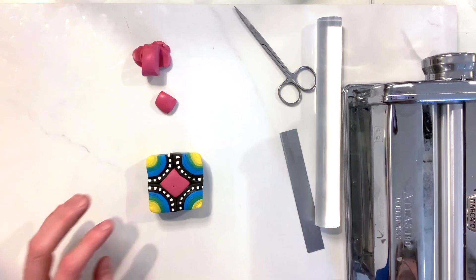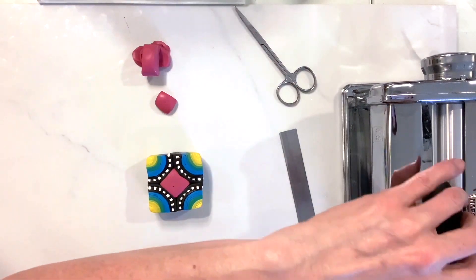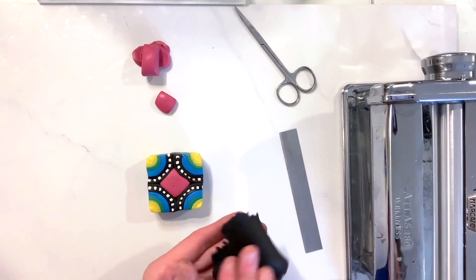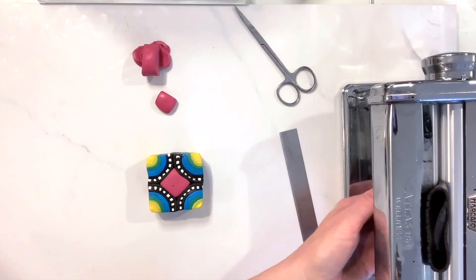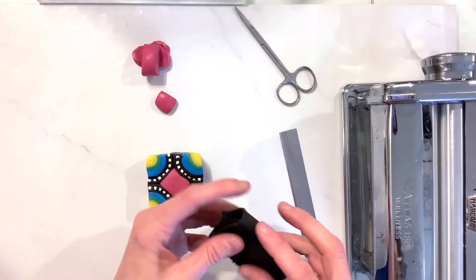Okay, so now that we have the simple cane built here, we're going to add on a black layer. This is going to give you a border around this cane.